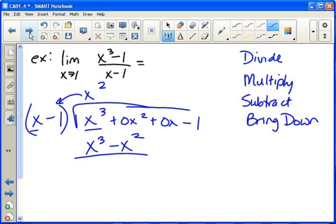Now we've divided and we've multiplied, so next we subtract. We do x cubed minus x cubed, which is zero. And then zero x squared minus negative x squared, so that's positive x squared.